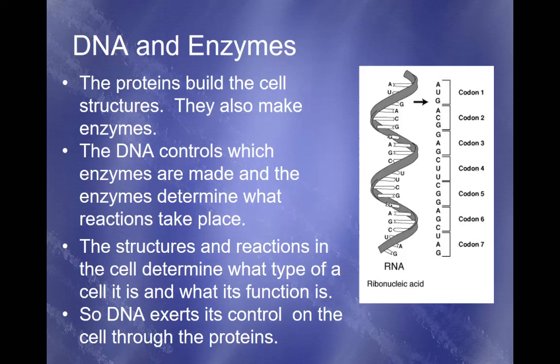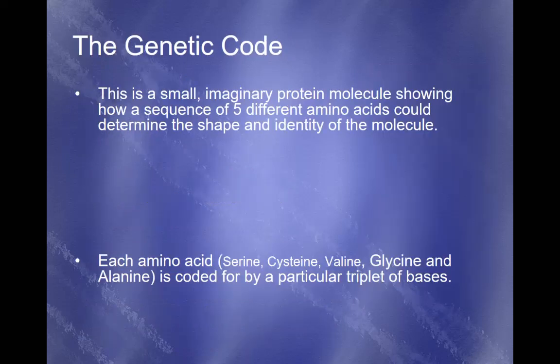DNA exerts its control on the cell through the proteins it produces. Remember from our nucleic acids work: RNA is a single-stranded molecule, and we've replaced thymine with uracil. Now I'd like you to take some space in your notes and look at the codon wheel attached to this set of notes. We're going to start thinking about how we convert from DNA to mRNA and eventually to our amino acids.